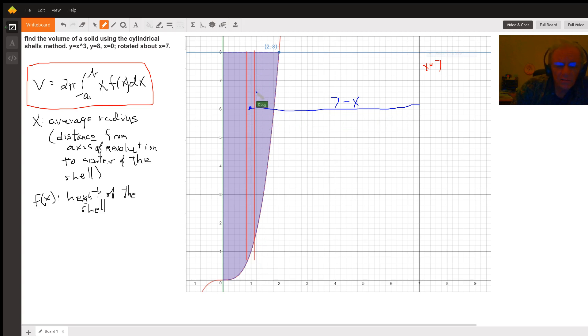The height of the shell will be the distance from here to here. Well, this point right here has a coordinate X, F of X, which is X cubed. So, this height right here could be represented by 8, top minus bottom, F of X, or 8 minus X cubed.